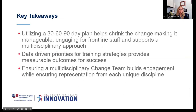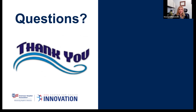Wrapping things up, some key takeaways: utilizing that 30-60-90 day plan really will shrink that change and make it manageable — it helps engage your frontline staff and provides support for a multidisciplinary approach, because there are multidisciplinary members of every single team and you need everyone's buy-in. Utilizing data-driven priorities for training and strategies provides measurable outcomes for your success — also key components when speaking to senior leaders or publishing results. Ensuring your multidisciplinary change team is there will help build engagement and ensure representation from all the unique disciplines participating in this TeamSTEPPS work.